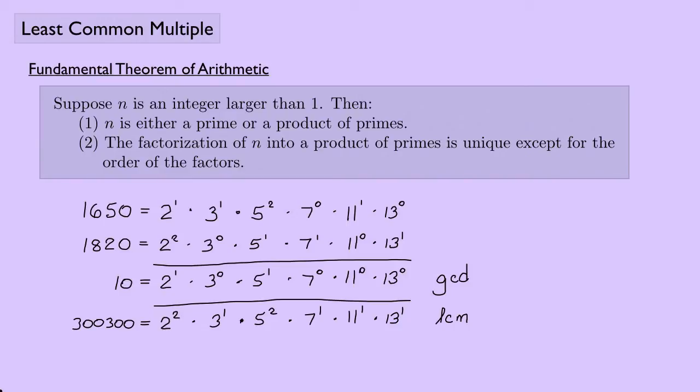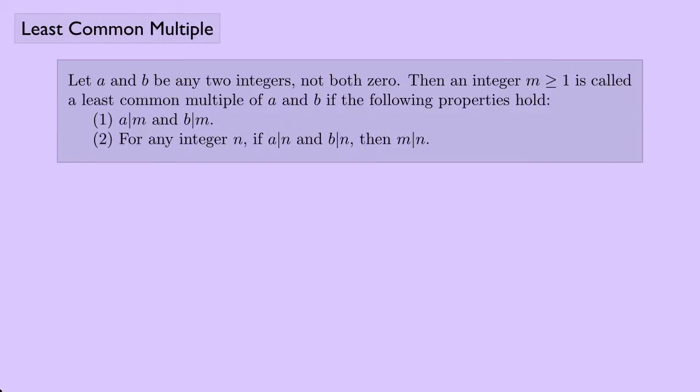Let's define the least common multiple. Let a and b be any two integers, as long as they're not both zero. Then an integer m, which is greater than or equal to 1, is called a least common multiple of a and b if: first, a divides m and b divides m; and second, for any integer n, if a divides n and b divides n, then m divides n. This definition is very similar to the one for greatest common divisor. We write the least common multiple of a and b as LCM(a, b) = m.